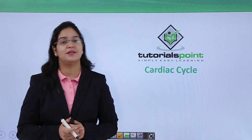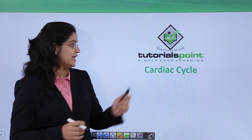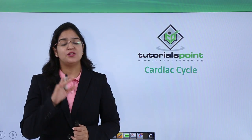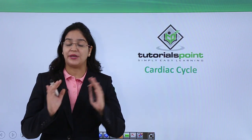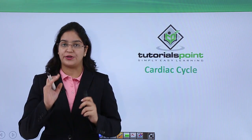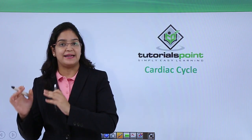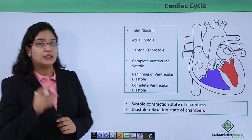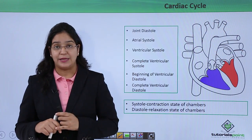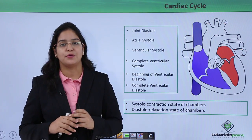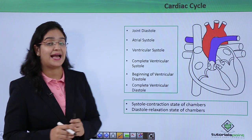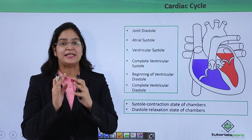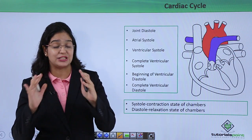Today we are going to learn about a very important topic: the cardiac cycle. A cardiac cycle is a time period which starts from the contraction of atria and ends at the relaxation of ventricles. Two important terms used throughout are systole, which is the contraction phase, and diastole, which is the relaxation phase of the chamber.